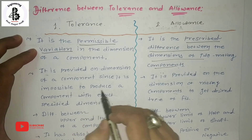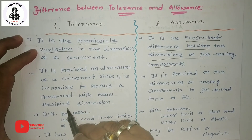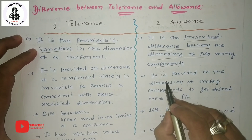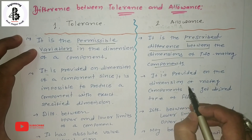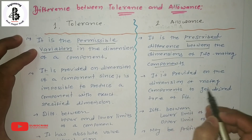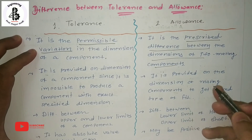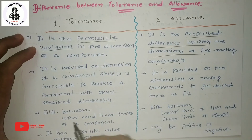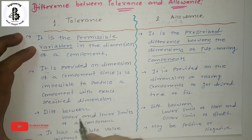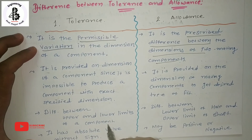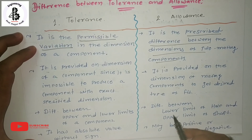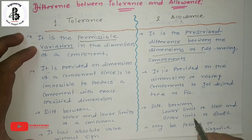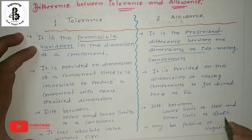For tolerance, it is provided on the dimensions of a component, since it is impossible to produce a component with exact specified dimensions. For allowance, it is provided on the dimensions of mating components to get the desired type of fit — either clearance fit or interference fit. For tolerance, it is the difference between the upper and lower limits of a component. For allowance, it is the difference between the lower limit of the hole and the upper limit of the shaft.